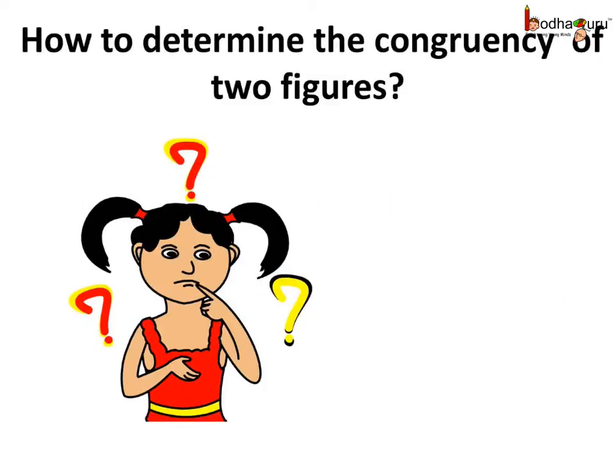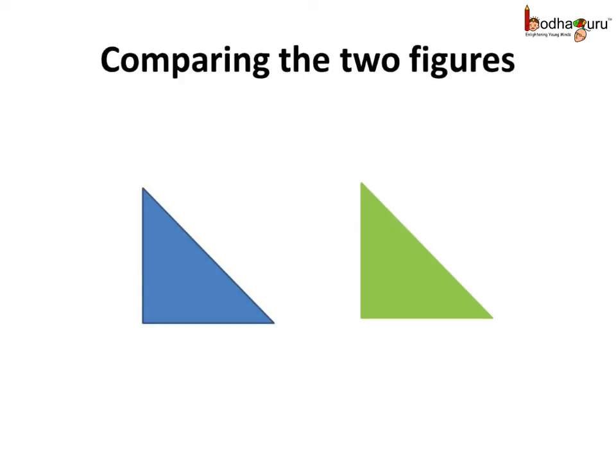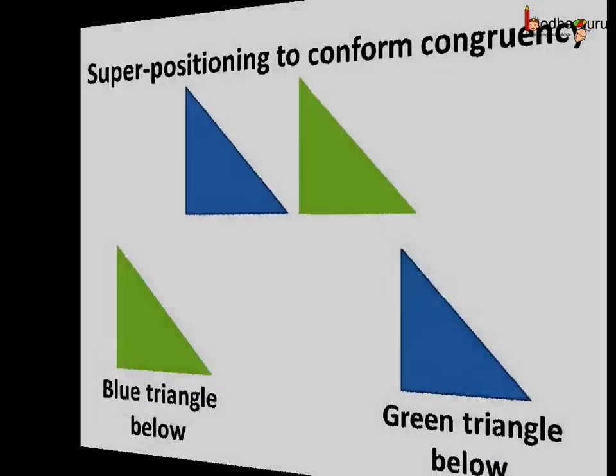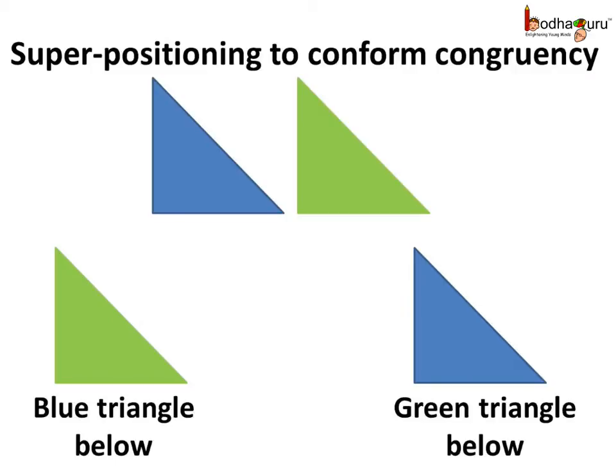Now how do we determine the congruency of two figures? Is there a way? We know two geometric figures are congruent if they coincide with each other exactly when one figure is placed over the other. This method of placing one object on the other to examine congruency is called the method of superposition. Here we have two triangles — a blue one and a green one. Are they congruent? We can superpose the blue triangle on the green triangle and vice versa, and if they coincide with each other exactly, then they are congruent.